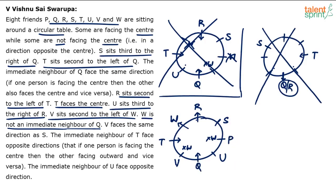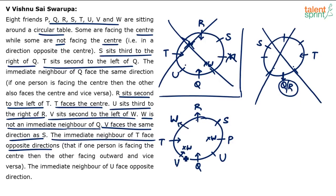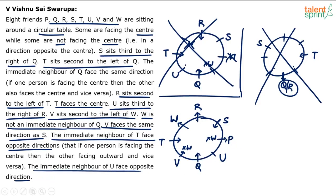Our arrangement is done. P takes the last remaining position. Now we just need to mark directions. V faces the same direction as S. The immediate neighbors of T face opposite directions: W is facing outwards, so V should face inwards — center. Since V faces center, S also faces center. For U's neighbors: Q faces center and P will face outwards, since neighbors of U face opposite directions. For U's direction, the immediate neighbors of Q face the same direction: V faces center, so U also faces center.